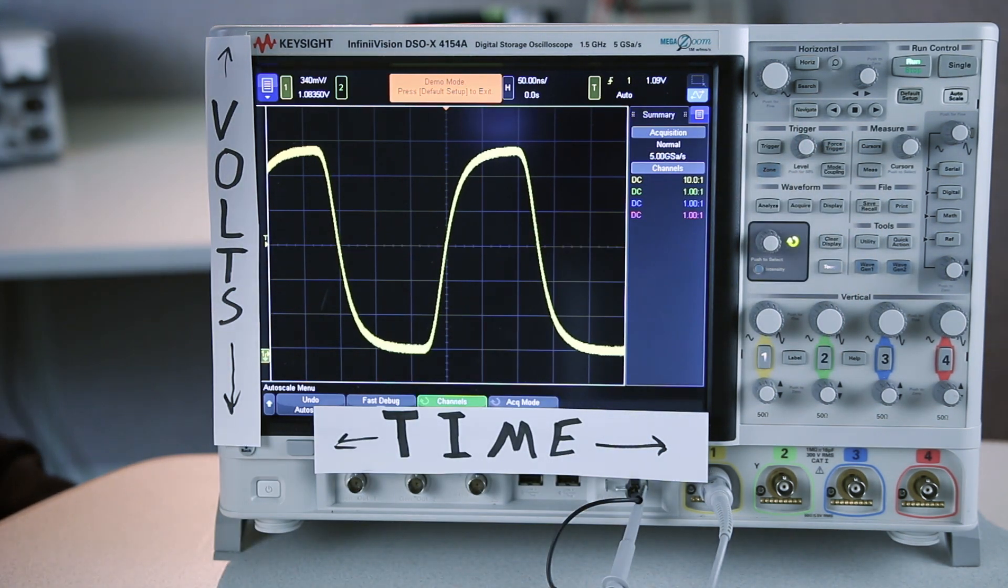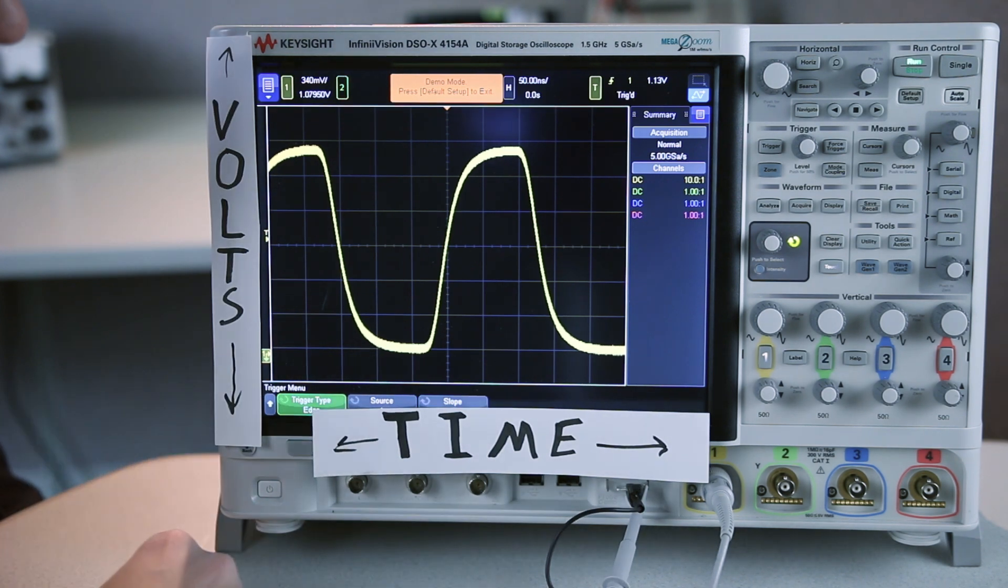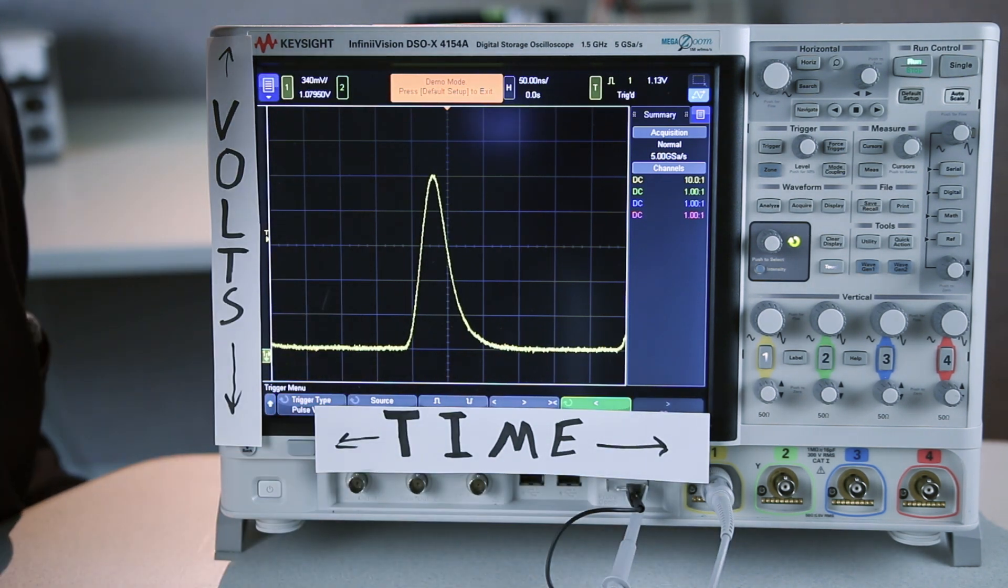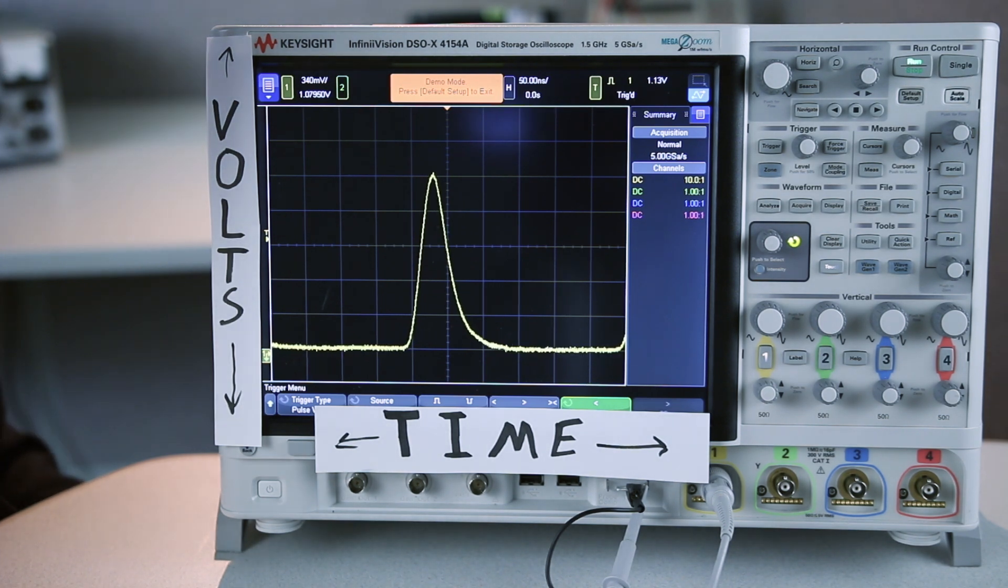There are lots of different trigger modes. For example, we could put the scope into a pulse width trigger mode. I'm now telling the scope to trigger on any pulses that are smaller than 100 nanoseconds. You can see that I'm triggering consistently on this small pulse.